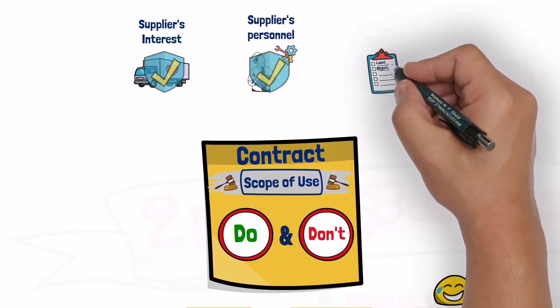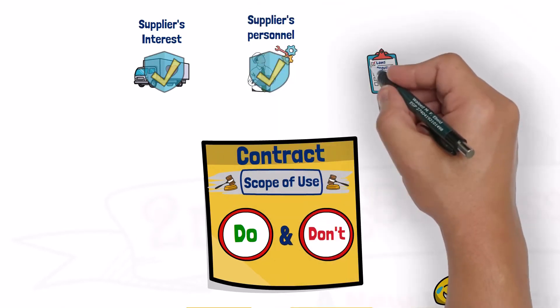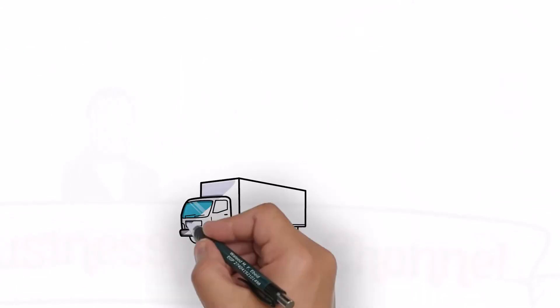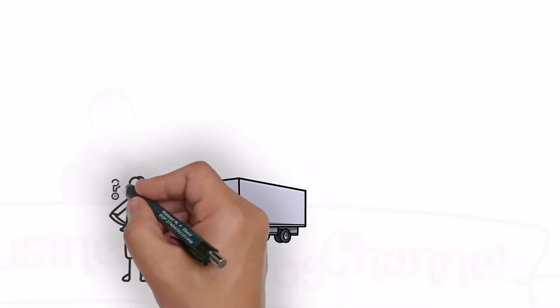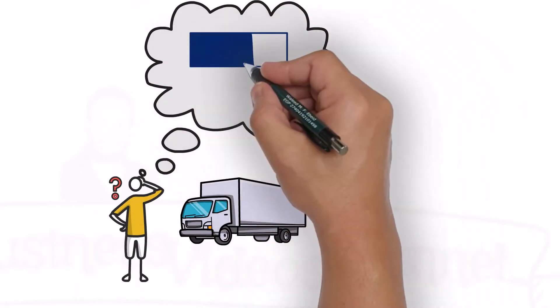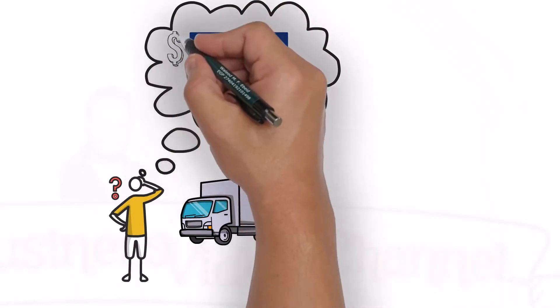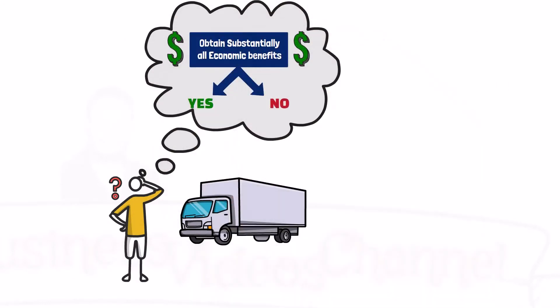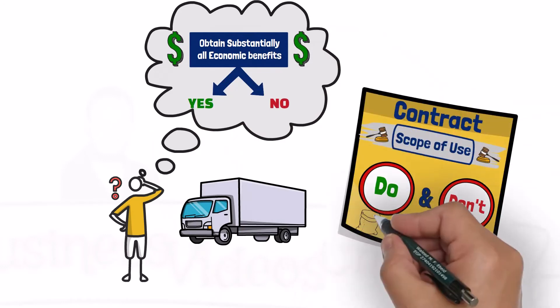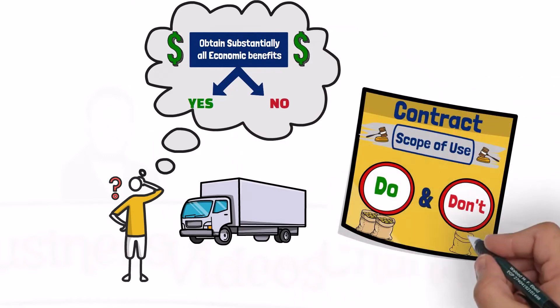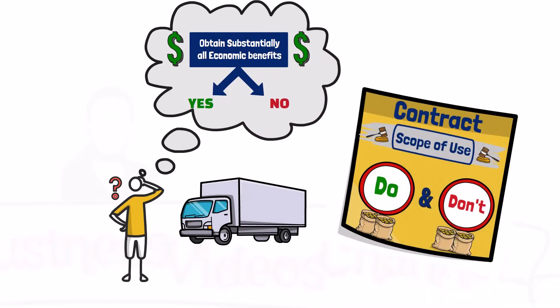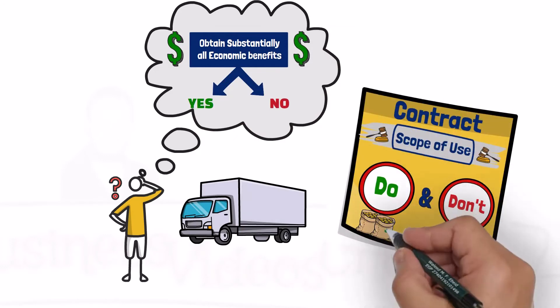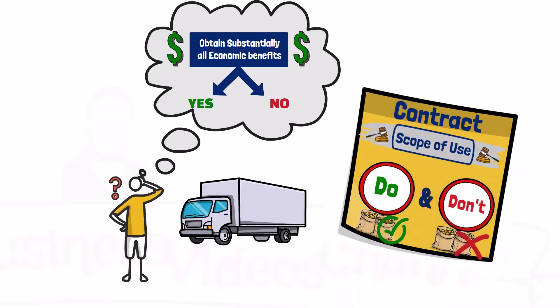Suppliers may also include scope definitions to ensure the supplier's compliance with laws or regulations. So if you are assessing whether a customer has the right to obtain substantially all the economic benefits from the use of an asset, and you find a defined scope of using that asset in the contract, then you should consider only the economic benefits arising from using that asset within that defined scope.